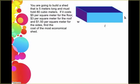The problem that we're being presented with is that we're going to build a shed that's five meters long and it has to hold 80 cubic meters. It's going to cost five dollars per square meter to construct the floor, three dollars per square meter for the roof, and the sides actually have a different cost. They're a dollar fifty per square meter and what we need to do is find the cost of the most economical shed.